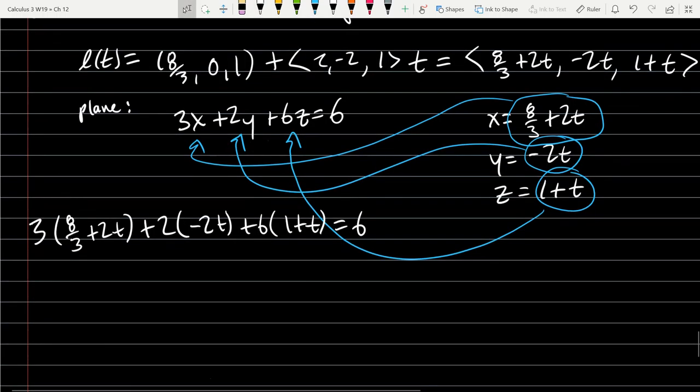So distribute: eight plus six t, minus four t, plus six plus six t, equals six.